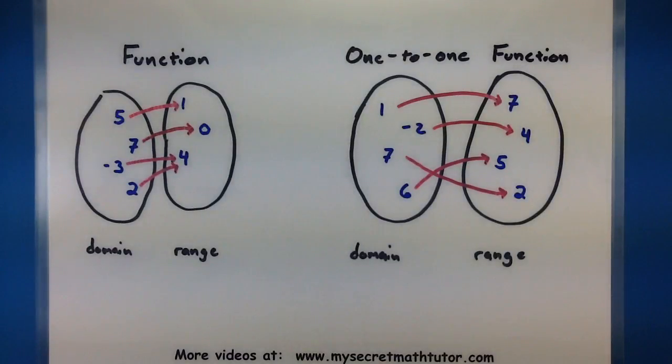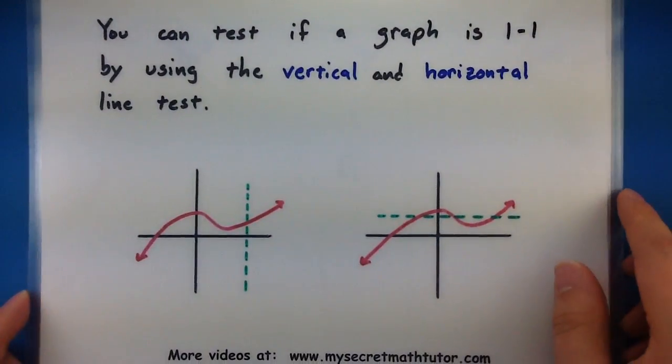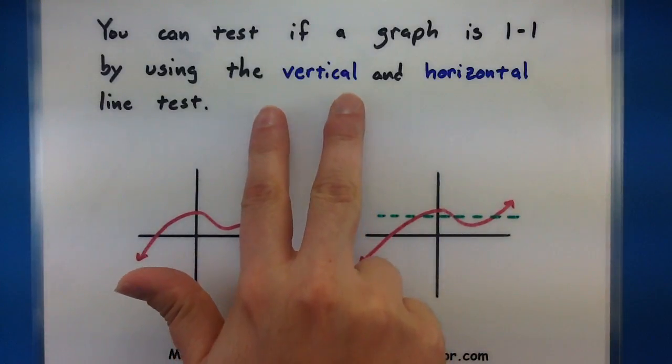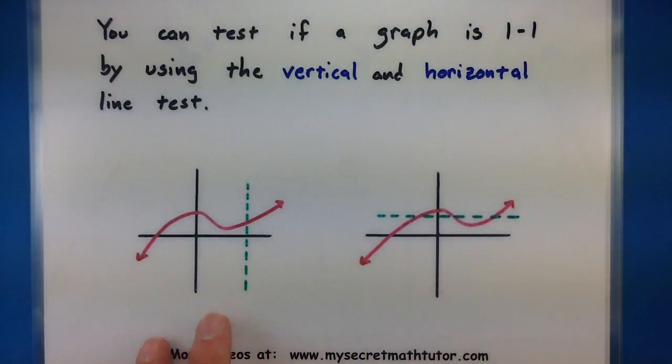Now in practice how do you really determine if something is one to one or not? Well if you have a graph to look at then you can determine if it's one to one by using the vertical and the horizontal line test. Each of these tests do something different but let me break them down. If you use the vertical line test on a relation this is testing if it is a function, if every input goes to one particular output.